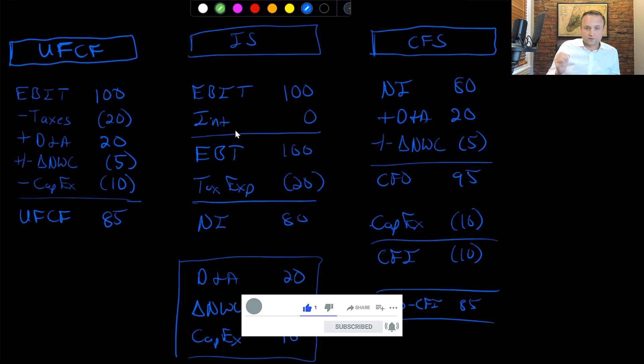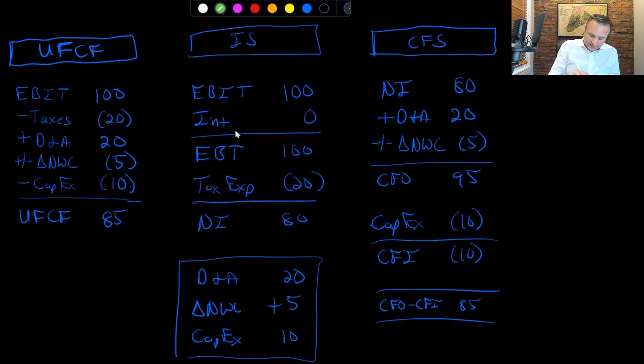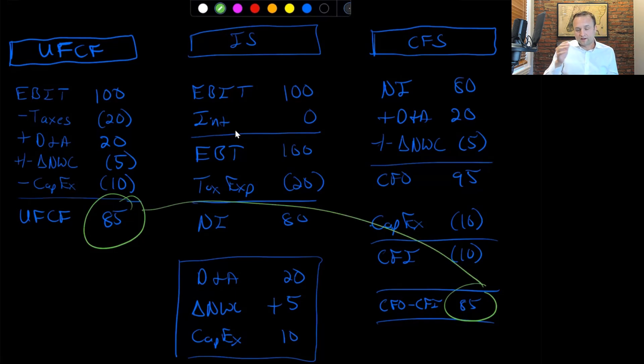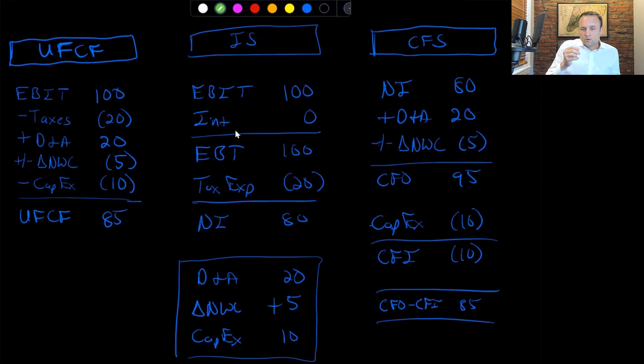So CFO minus CFI is 85 here. And I want to note a few things again before we jump ahead. The first thing is we ended up in the same place on both sides here. So we have 85 and 85. As we'll see, that changes when you incorporate interest expense, but we ended up in the same place as the first thing to note.